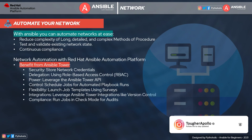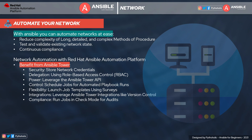Network automation is very complex when it comes to device configurations because you need to ensure that you have deployed the correct configuration, and hundreds of services could get affected by a single mistake — one of the most challenging things for network and DevOps engineers. With Ansible, you can automate and reduce the complexity of long, detailed, and complex method of procedures, or what we call MOPs. MOPs are basically the steps used as part of network deployment. With Ansible, you can easily test and validate the existing network state and services and have continuous compliance, supported by the Red Hat Ansible Automation Platform and Ansible Tower.